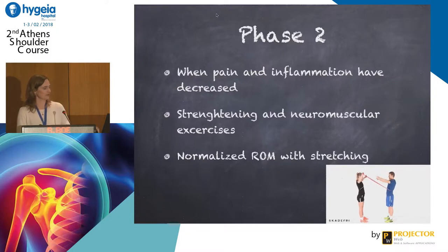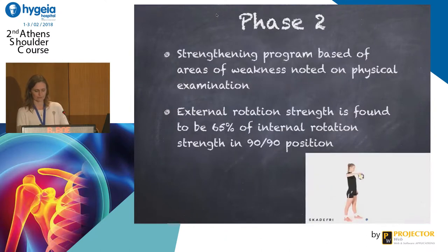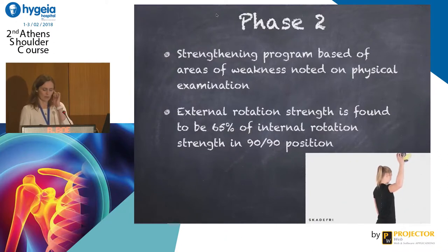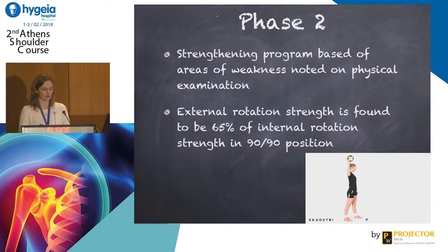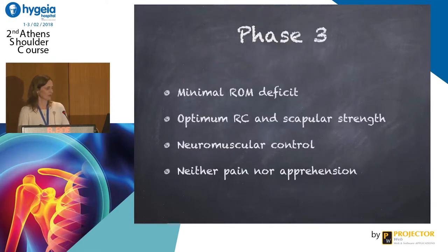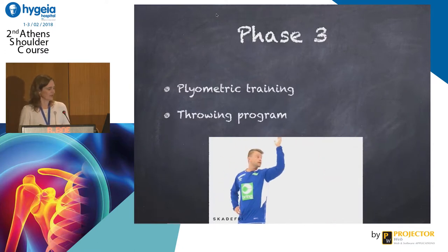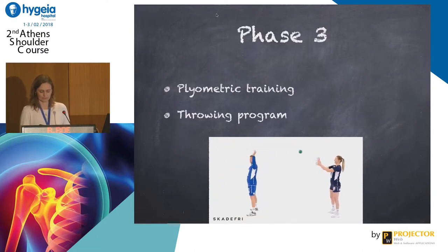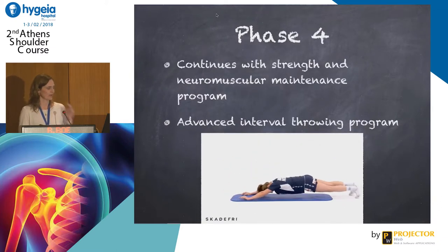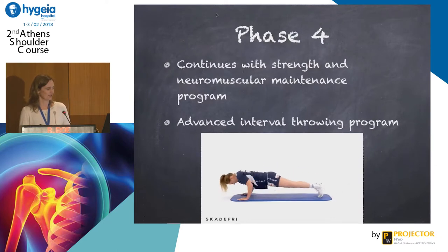Once pain and inflammation have decreased, you move to phase two with strengthening and neuromuscular exercises while continuing to work on normalized range of motion. The strengthening program should be based on weaknesses found during physical examination, noting that athletes are expected to have much more strength in external rotation than internal rotation. Phase three begins when the athlete has no pain or apprehension, optimizing exercises for rotator cuff and scapular strength, introducing plyometric training with high force and weight, and starting a throwing program. Phase four is a continuation with more advanced exercises and individual throwing programs.